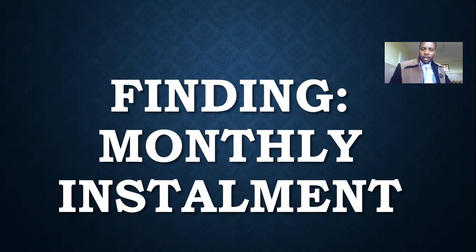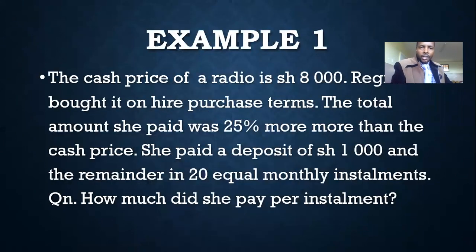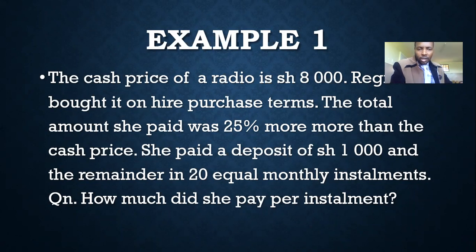Looking at the example given below: the cash price of a radio is 8,000 shillings. Regina bought it on hire purchase terms. The total amount she paid was 25% more than the cash price. She paid a deposit of 1,000 and the remainder in 20 equal monthly installments. The question is: how much did she pay per installment?